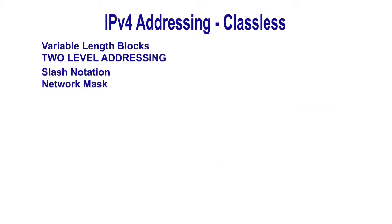Network Mask: The idea of network mask in classless addressing is the same as in classful addressing. A network mask is a 32-bit number with the n leftmost bits all set to ones and the rest of the bits all set to zeros.